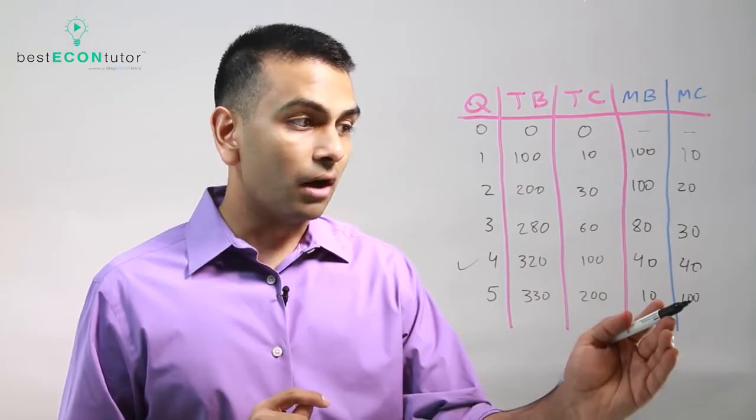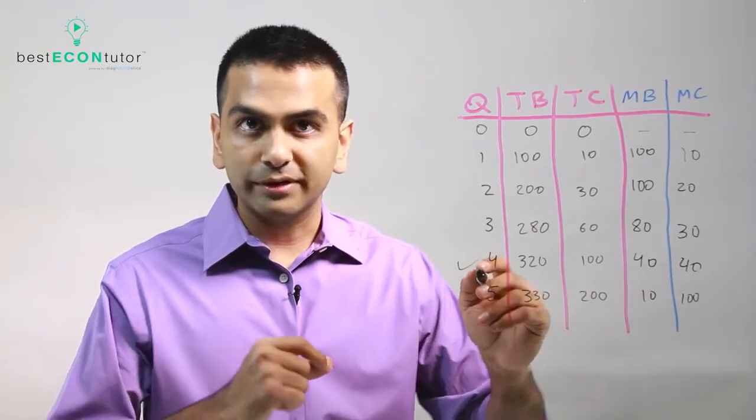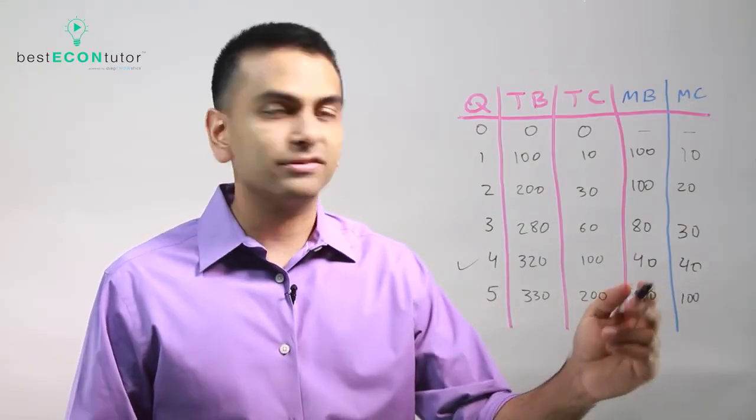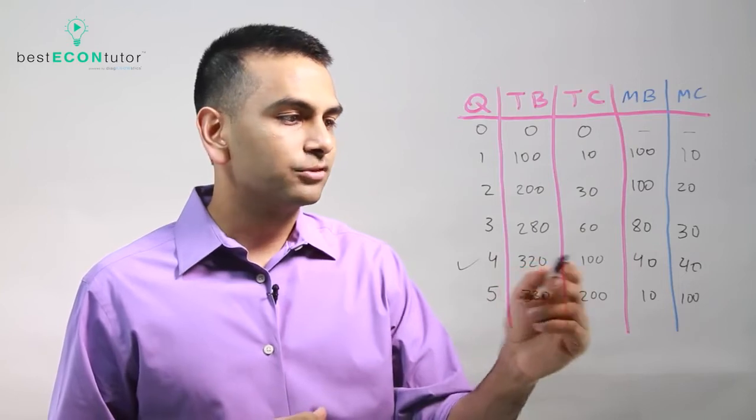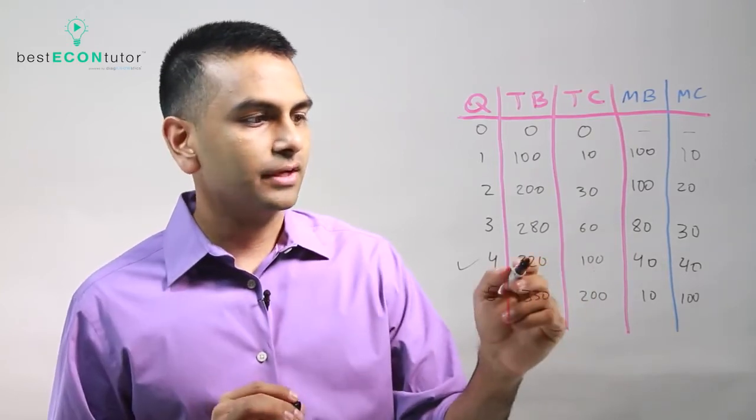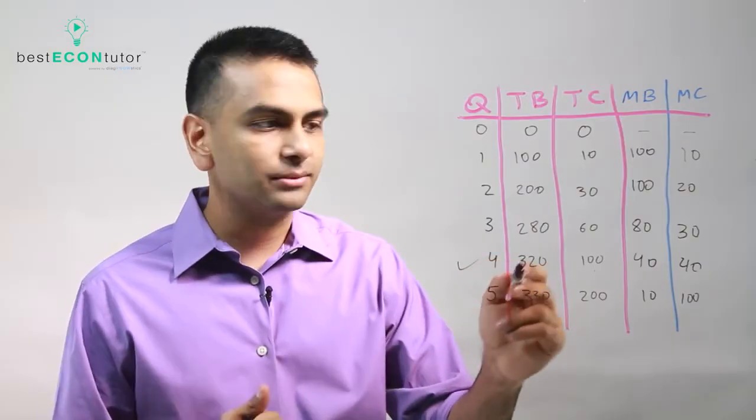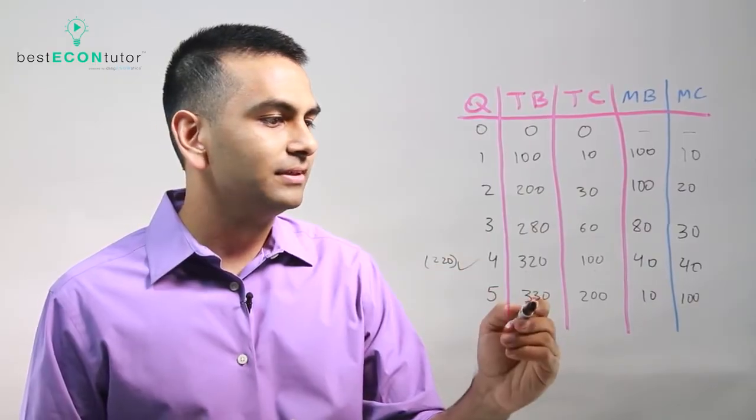But should you go to the fifth house? Well the cost will outweigh the benefit by ninety, so that means that if you were to go from four to five houses then your profits would go down by that ninety because you're sort of losing that, which makes sense. Your profits are 220 because your total benefit for the four houses, 320 minus 100.